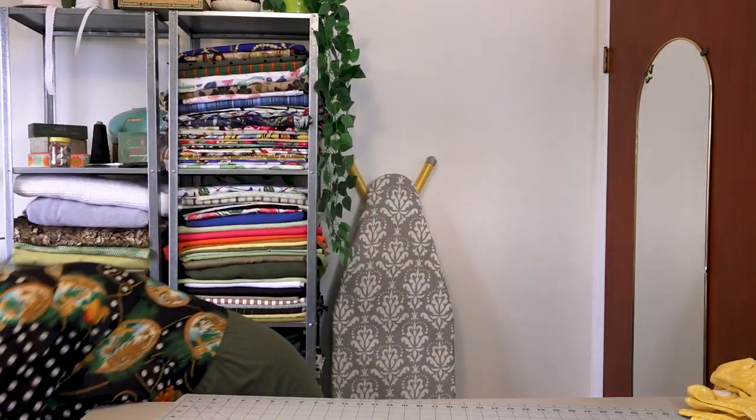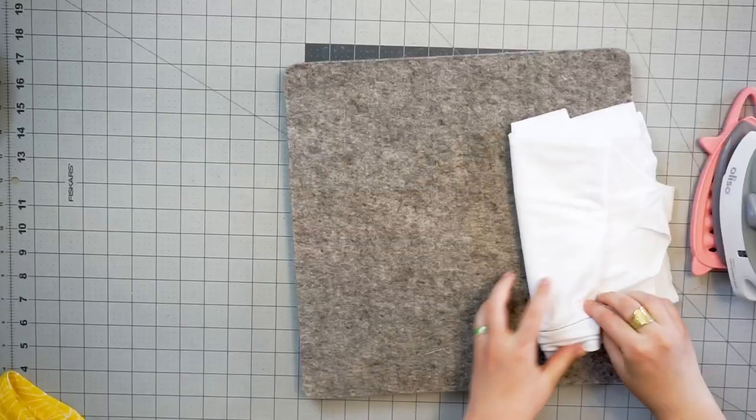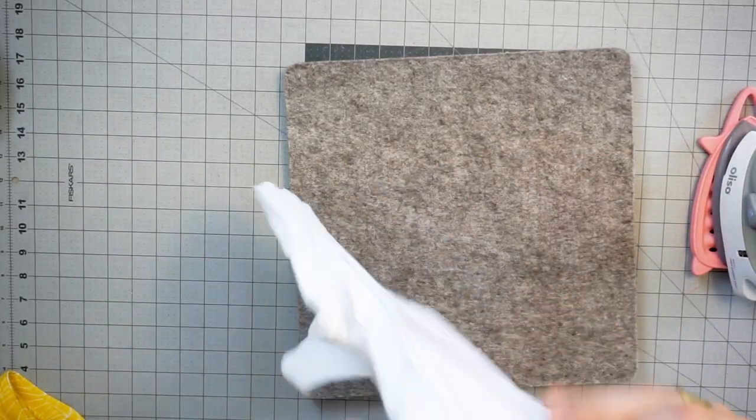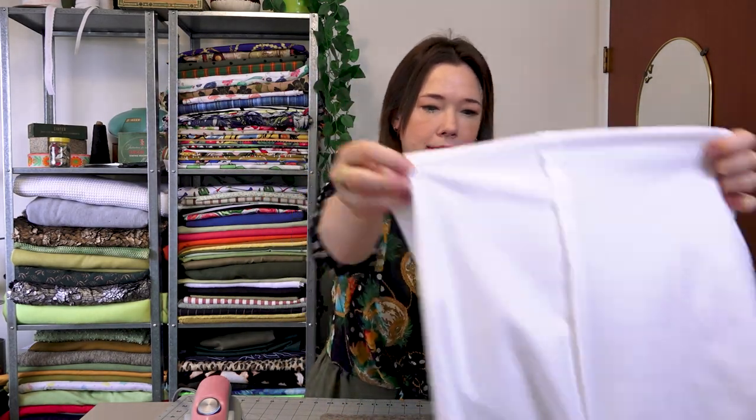I have another cami cut out because you can never have enough camis. I'm going to press up my hem allowance first—I find it easier with twin needles to press your hem allowance because you actually stitch from the right side. I have my side seam stitched with a stretch stitch.